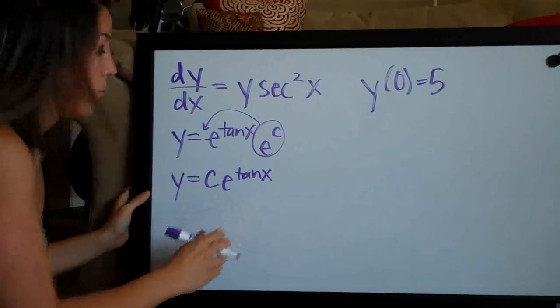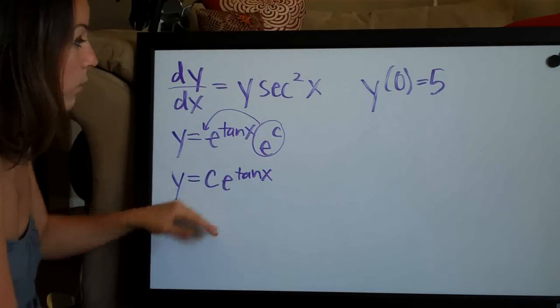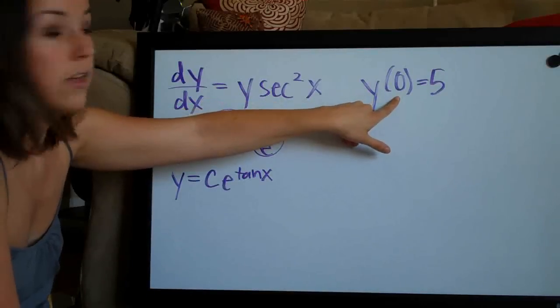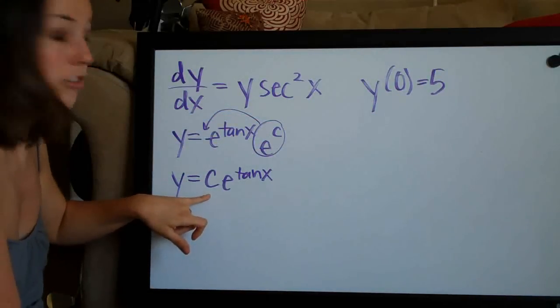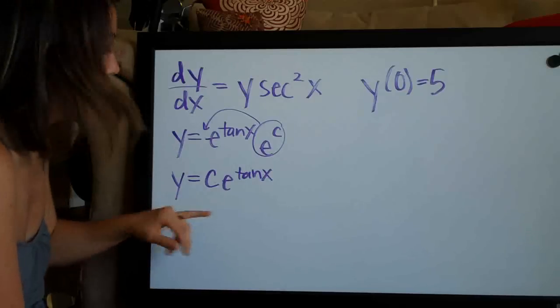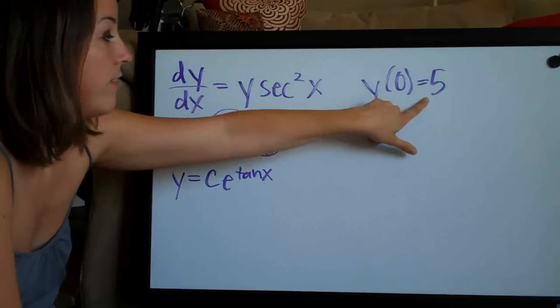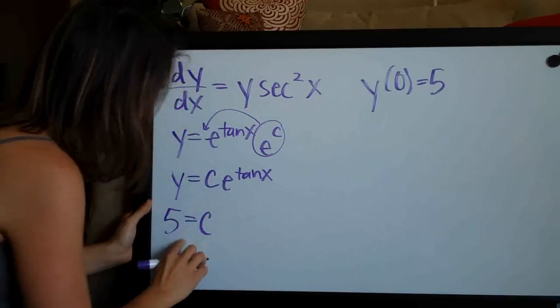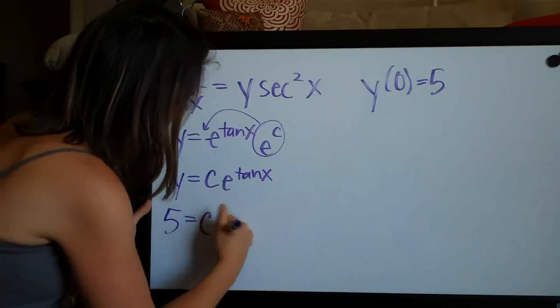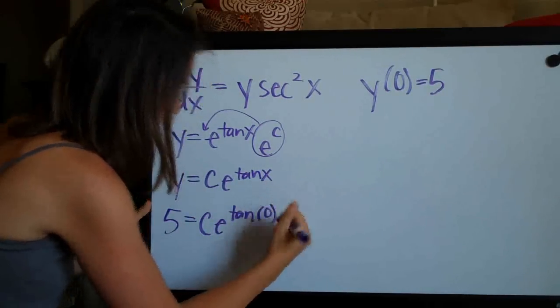And we're actually done simplifying at this point and now that we've gotten our function to this point, what we can go ahead and do is use the values in our initial condition, plug them into this function and solve for c which is the end goal here. So we'll go ahead and plug zero in for x and five in for y and solve for c. So we'll get five equals c e to the tangent of zero.